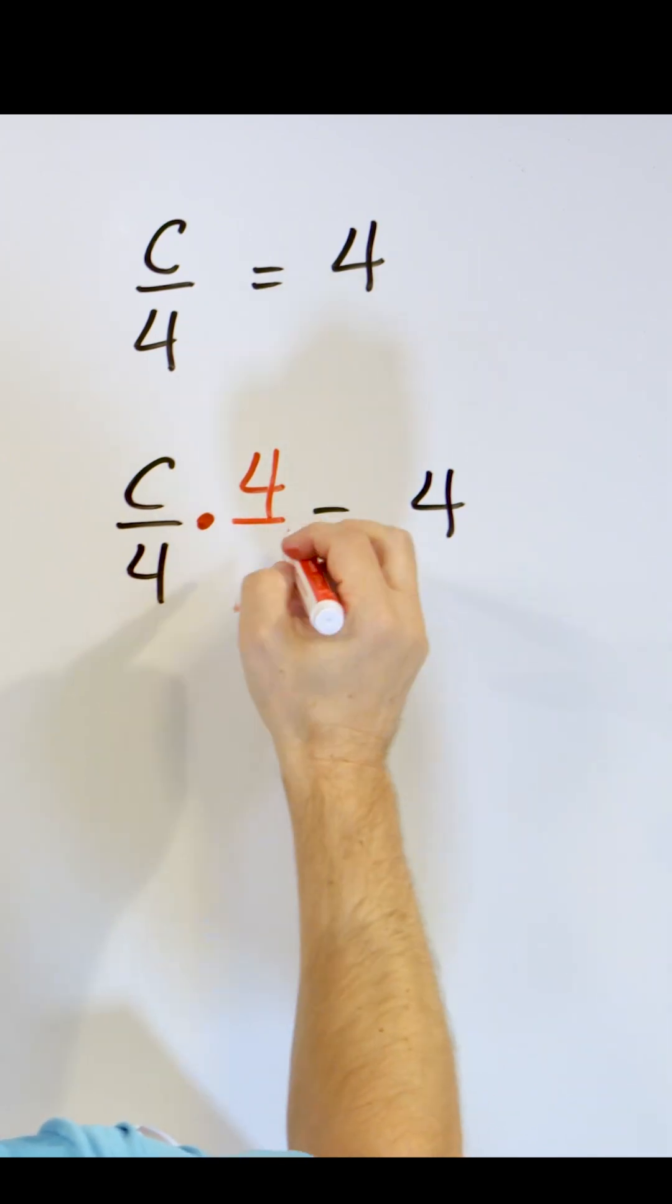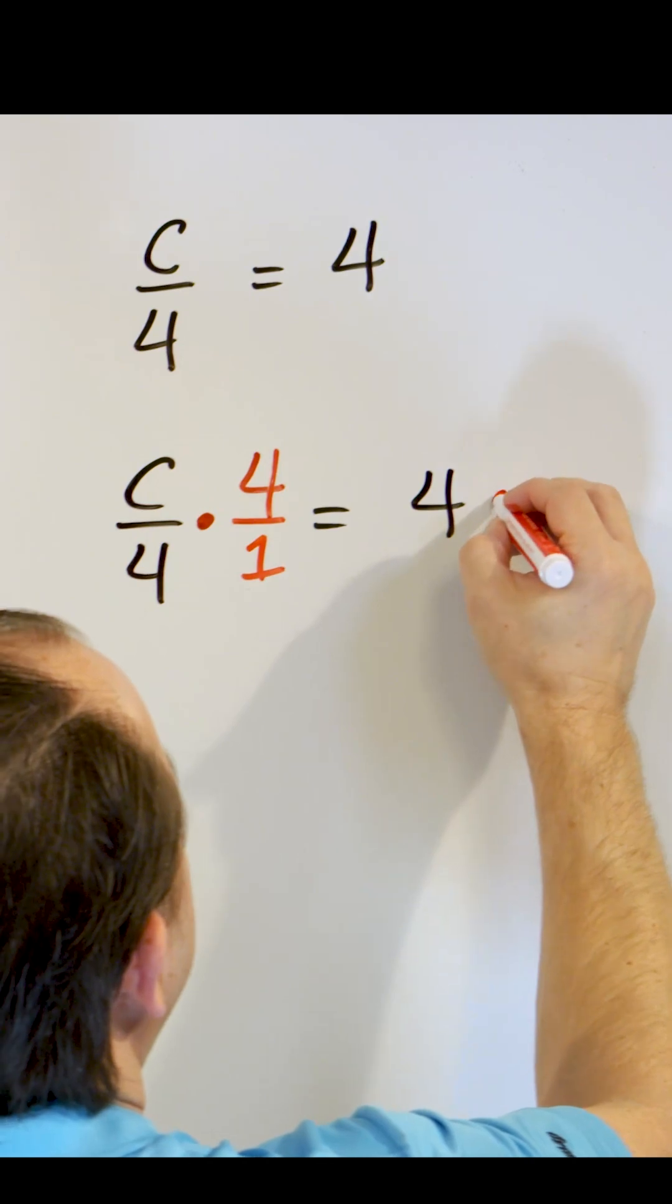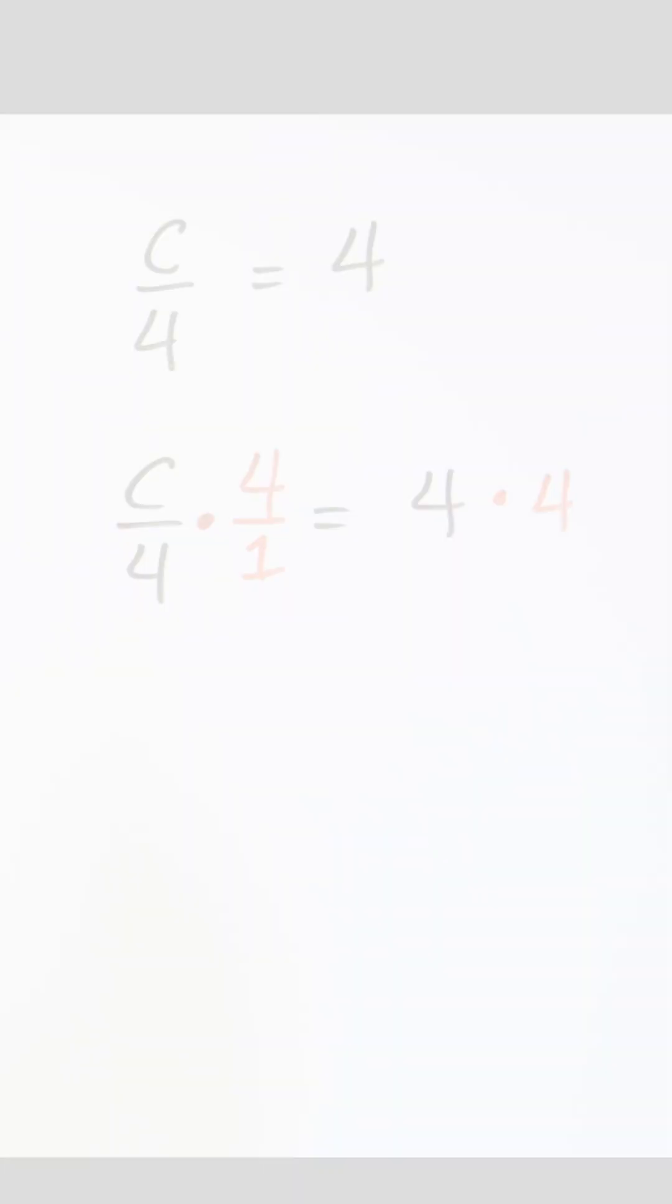Because anything as a fraction can be itself over 1. So we're multiplying by 4, but we're going to write it as 4 over 1, and then we're going to multiply the right-hand side by 4 as well.